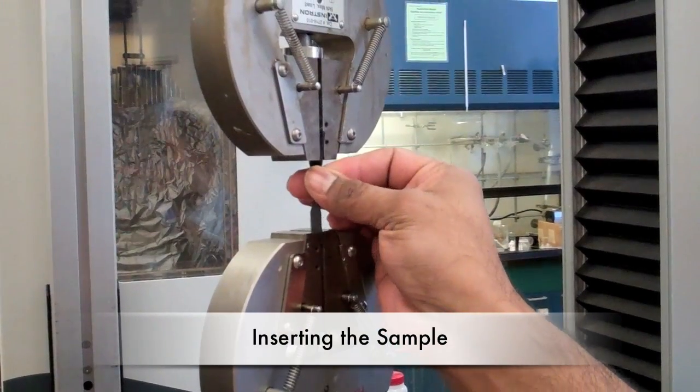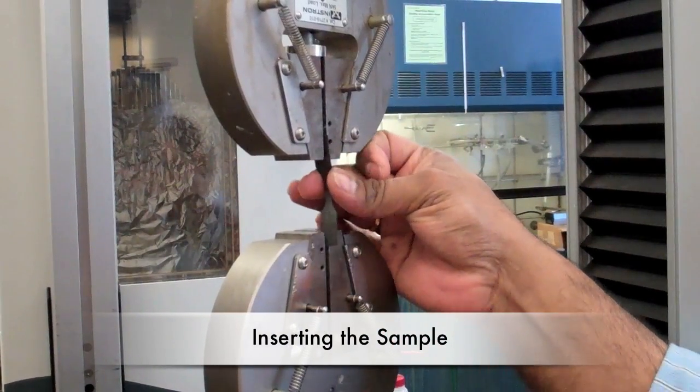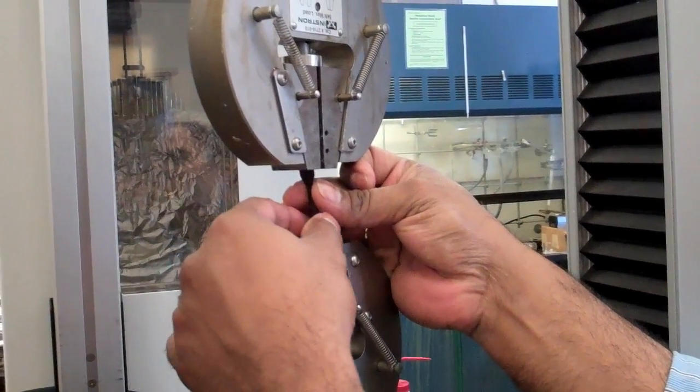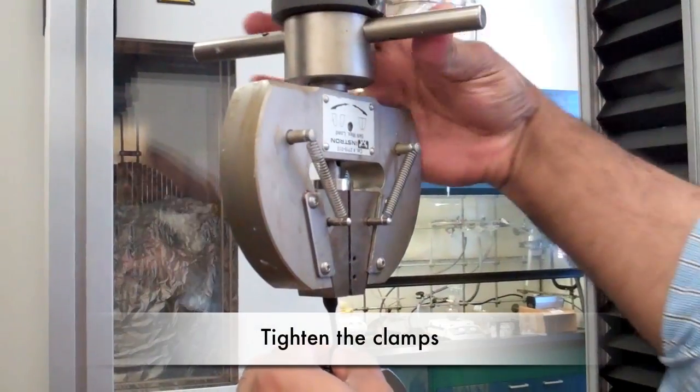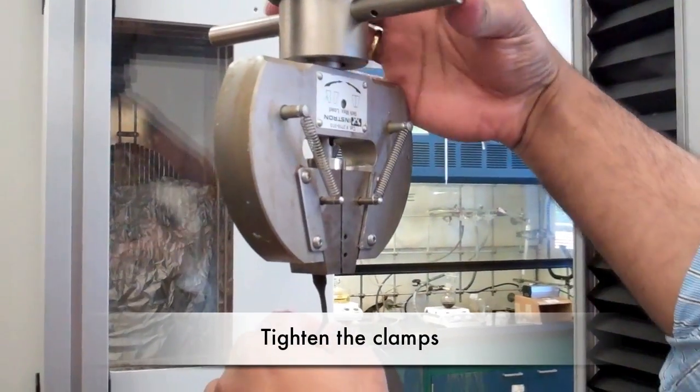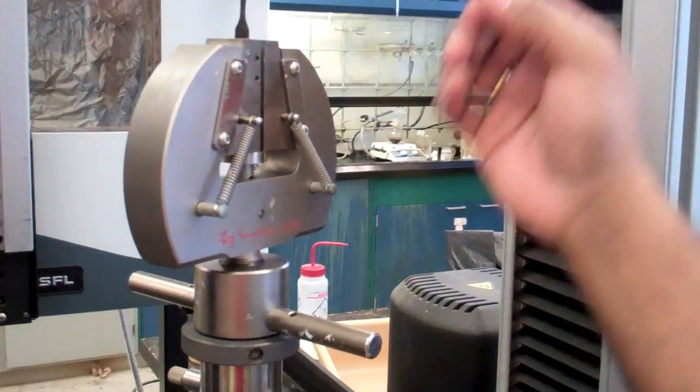Next, the sample must be inserted. Typical gauge lengths are about 40 millimeters, so the clamps should be positioned accordingly using a micrometer or a ruler. Position the sample in the middle of the clamps and tighten the top clamp first using the bar at the top, then tighten the bottom clamp.